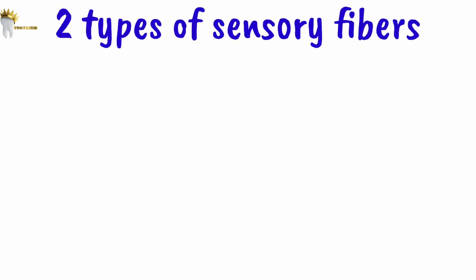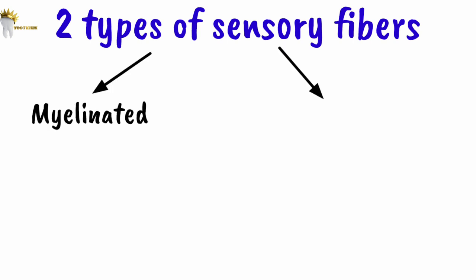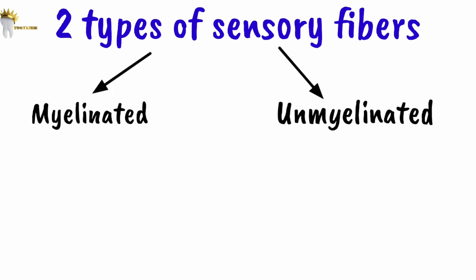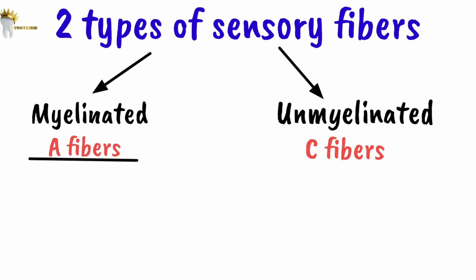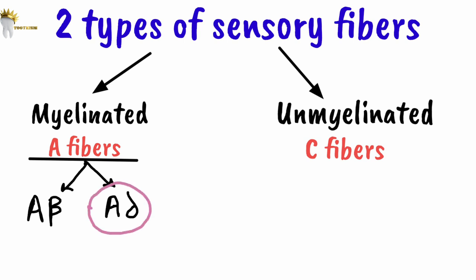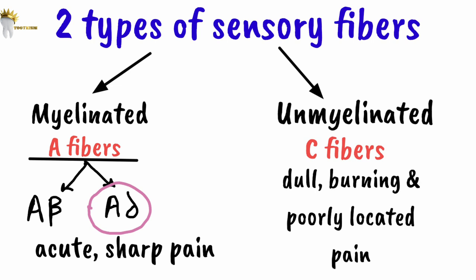To understand pulp tests, we need to understand how the pulp is innervated. There are two types of sensory fibers: myelinated, called A fibers, and unmyelinated, called C fibers. The pulp is innervated mainly by A fibers, which have two subtypes — A-beta and A-delta — with 90% being A-delta fibers. The A-delta fibers mediate acute sharp pain, while C fibers mediate dull, burning, and poorly localized pain.